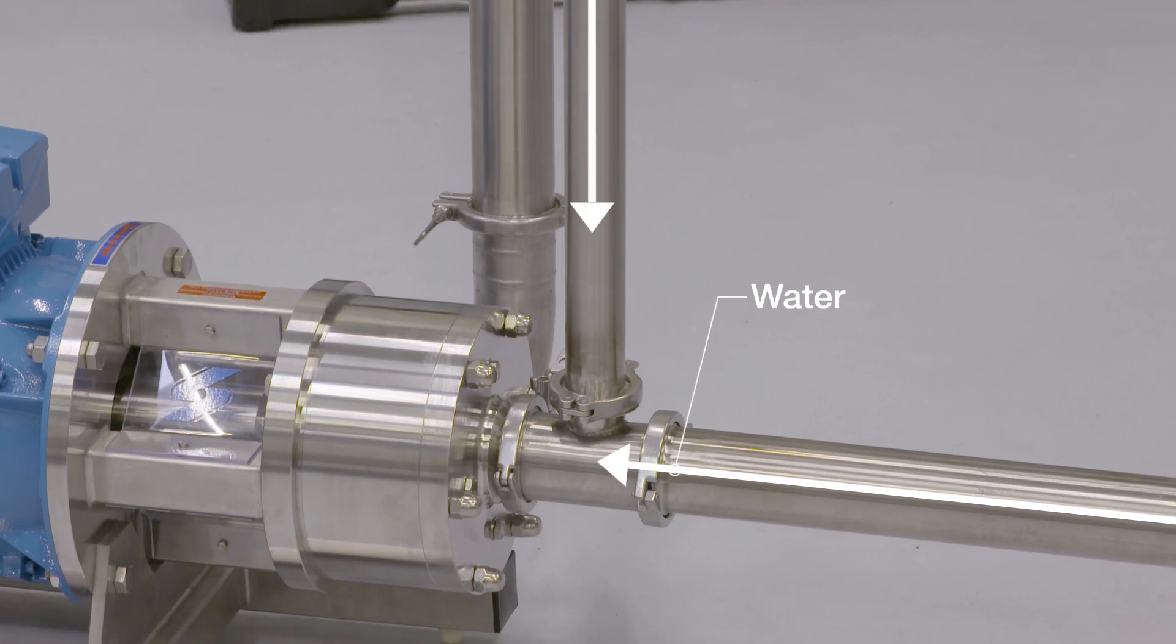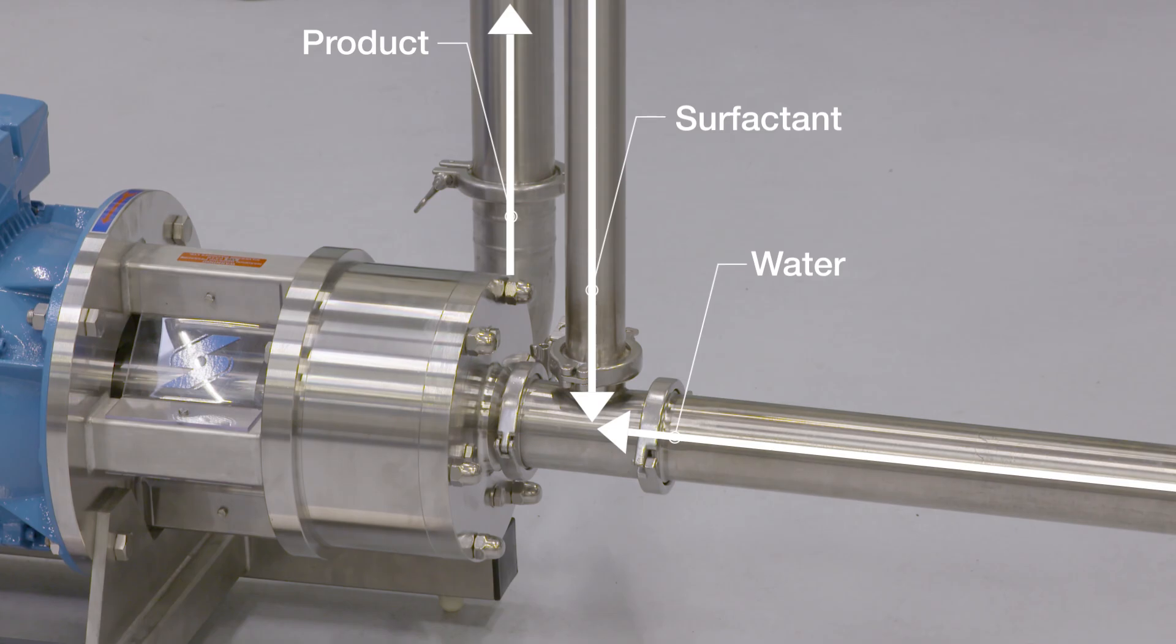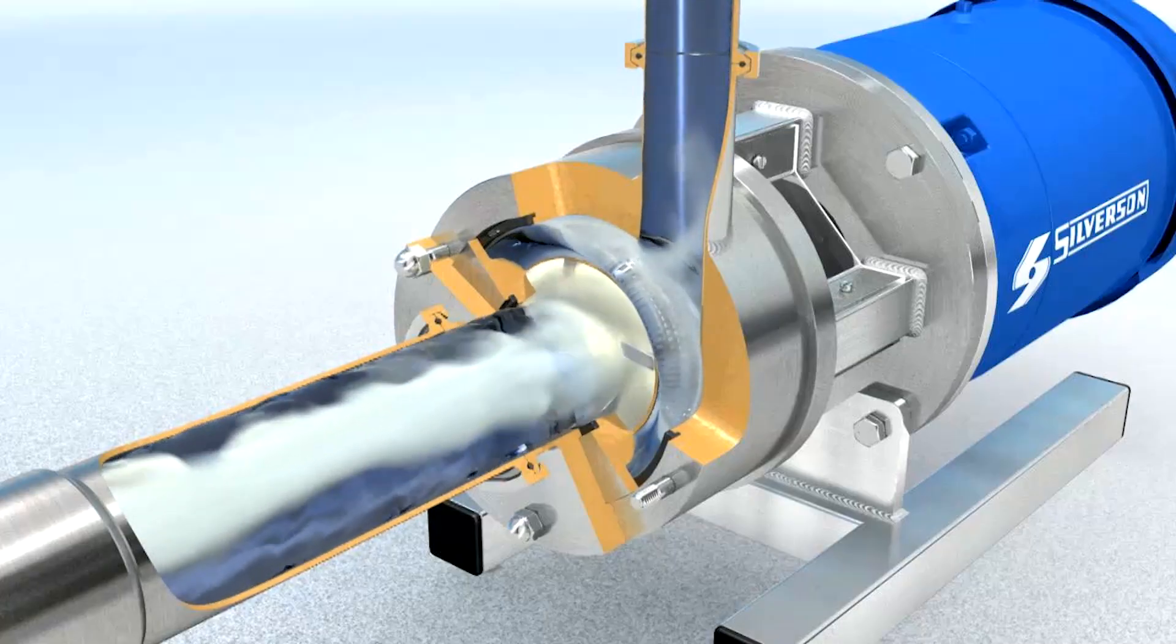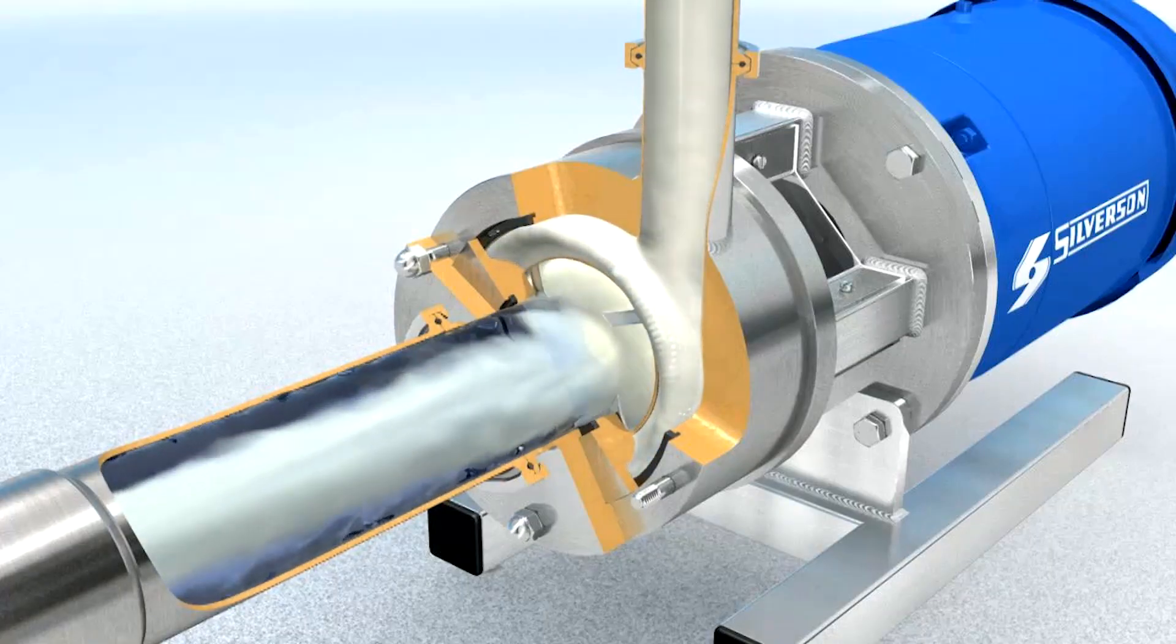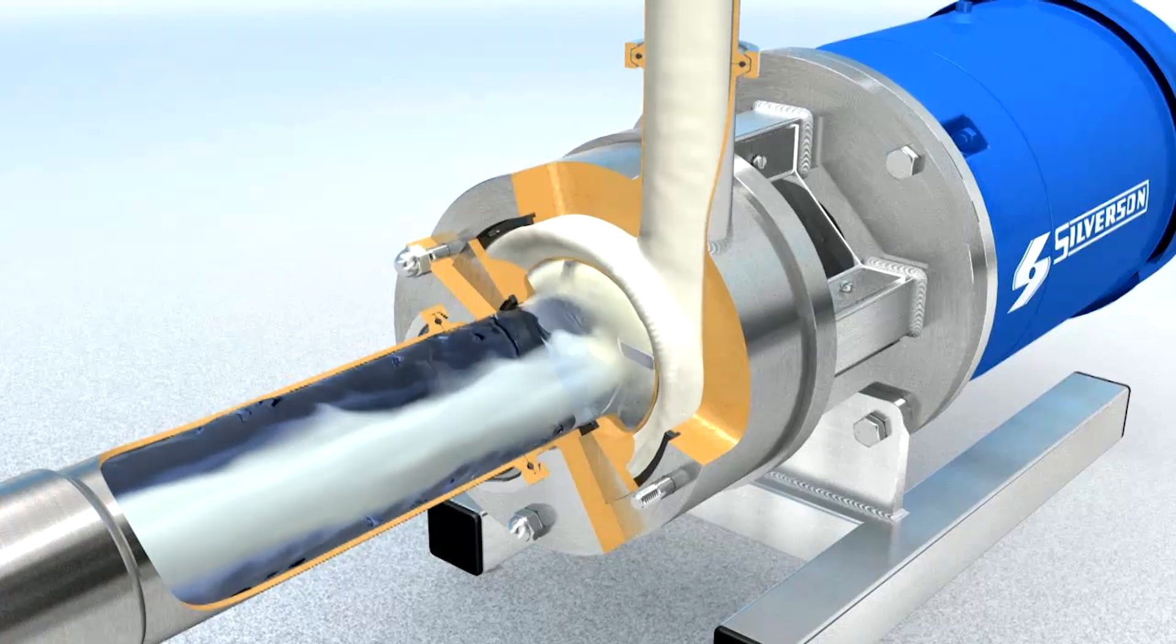The surfactant is pumped into the water stream just prior to the inline mixer so that the liquids mix immediately on contact in the high shear rotor stator workhead. This ensures a uniform mix which is recirculated back into the vessel. Dilution is completed in a fraction of the time taken by conventional methods.